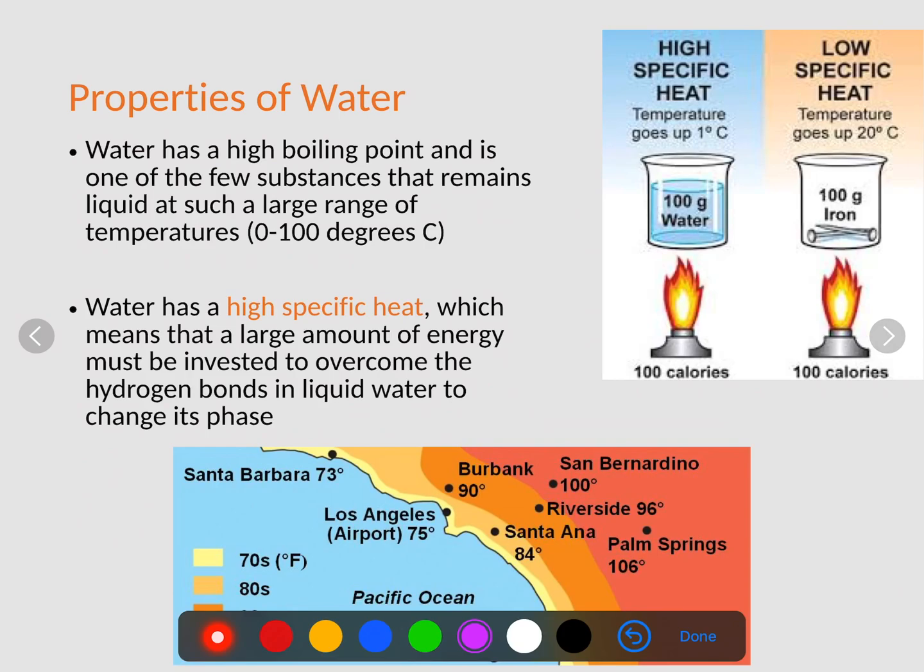Another one we have is high specific heat. Now water has a high boiling point and is one of the few substances that can remain a liquid at such a large range of temperatures from zero degrees to 100 degrees. So what specific heat pretty much means is that it's very difficult to change the temperature of water. Large amounts of energy must be invested to overcome the hydrogen bonds in liquid water to change its phase.